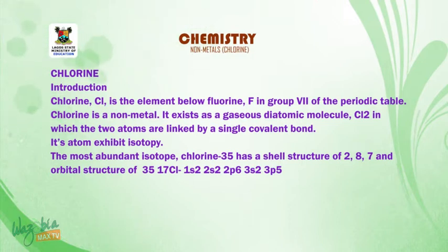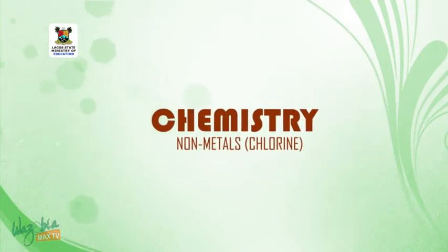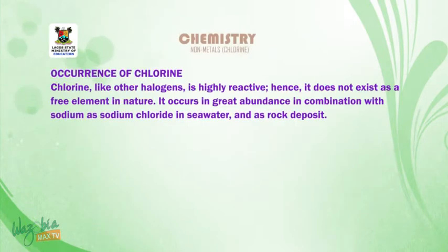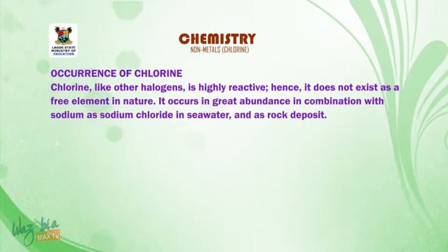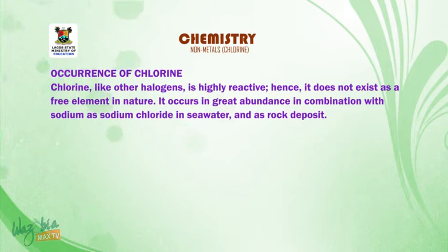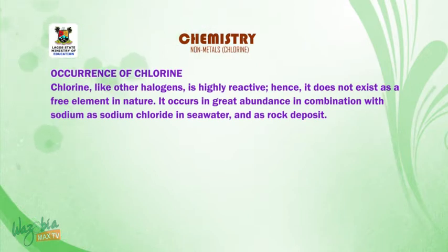After this short break, we are going to look at the occurrence of chlorine. Welcome back. Occurrence of chlorine: chlorine, like other halogens, is highly reactive. Hence, it does not exist as a free element in nature. It occurs in great abundance in combination with sodium as sodium chloride in seawater and as rock deposits.